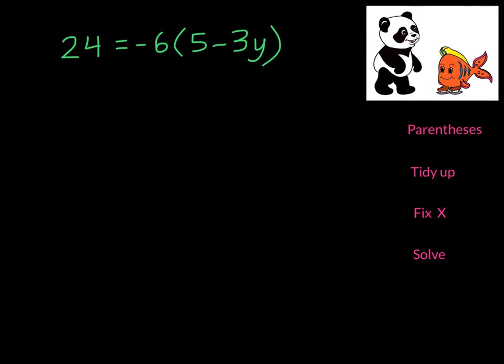In this first equation we see that negative 6 is in front of the parentheses, so we need to distribute it. We need to multiply it times 5 and times negative 3y. This will give us negative 30 and positive 18y.